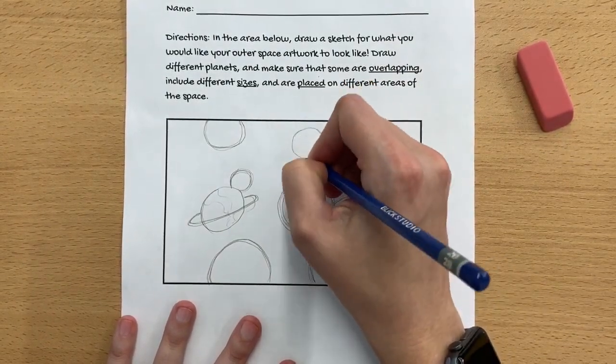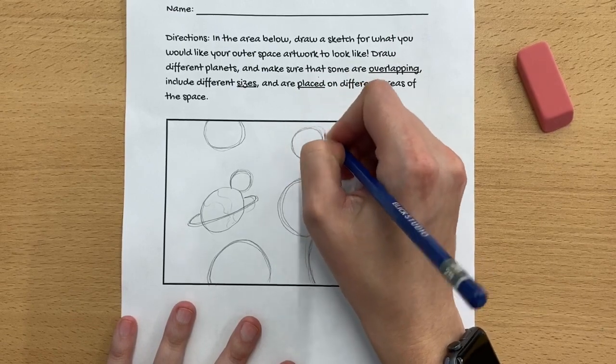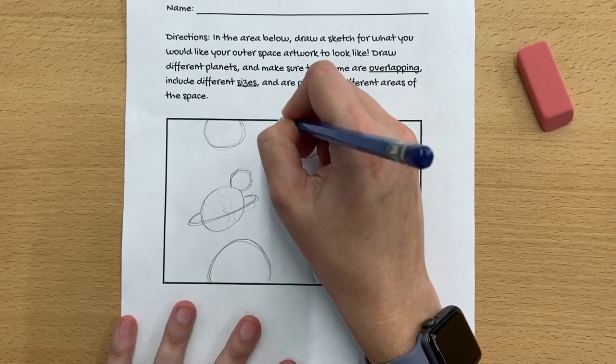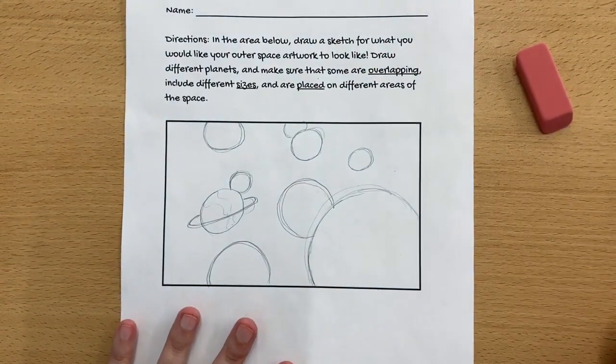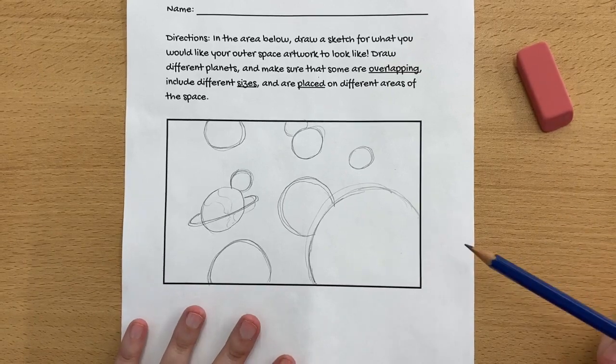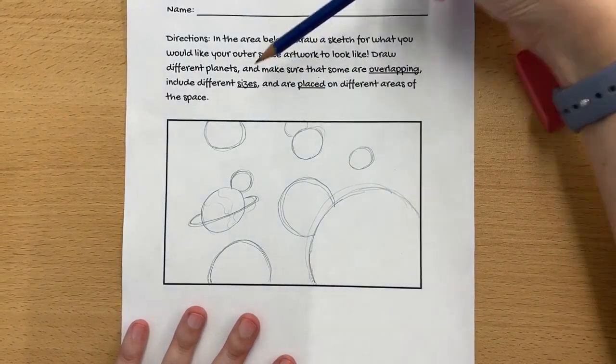Okay, so I think that I have enough planets and also enough examples of overlapping, different sizes, and placement.